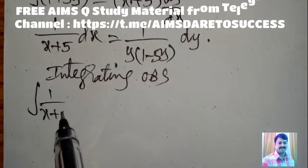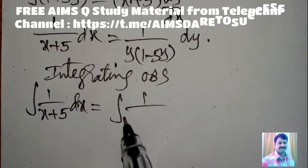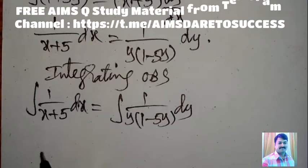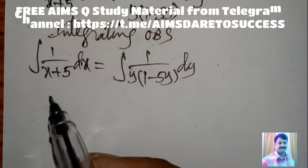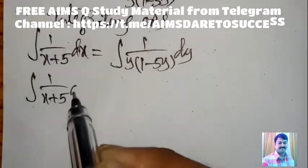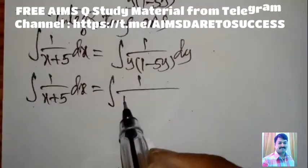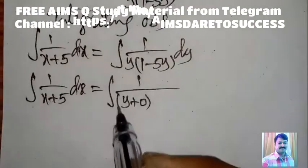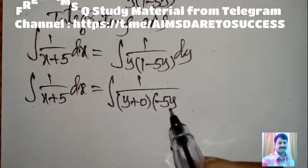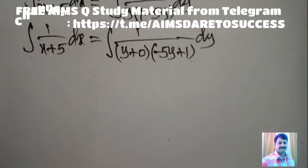Integral of 1/(x + 5) dx equals integral of 1/[y(1 − 5y)] dy. The right side can be written as integral of 1/[(y + 0)(−5y + 1)] dy.